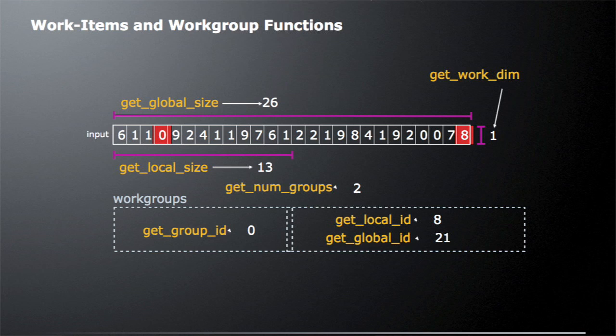The next thing we might want to find out is the local size. When we launched this kernel, we determined that the local size was 13 — meaning our work group has 13 elements in it. So if our global size has 26 elements and our local size has 13, that means we have two groups. If we called getNumGroups, that would tell us we have two groups. For the highlighted work item on the left, if we called getGroupID that would be zero, because this is the zeroth work group. If we called the same function on the right work group, we would get work group ID of one.